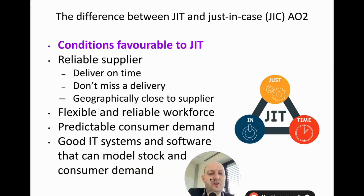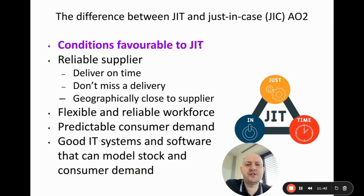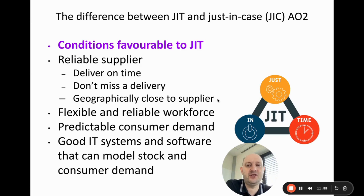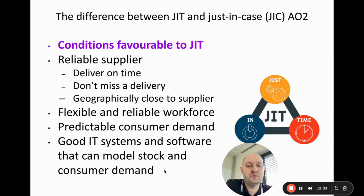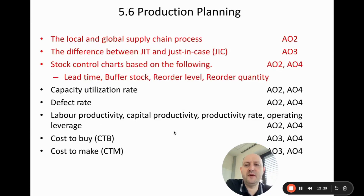Finally, the conditions favorable to just-in-time include: a reliable supplier, since deliveries must arrive exactly when needed; businesses may locate geographically close to suppliers to ensure fast deliveries; a flexible and reliable workforce, as workers may need to produce different things in response to the market; predictable consumer demand, since rapidly changing demand makes it difficult to maintain low stock levels; and good IT systems and software to model stock levels and consumer demand. That covers everything for this video — see you in the next one.